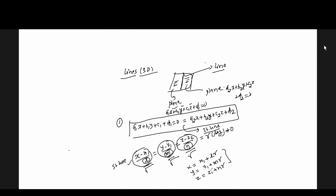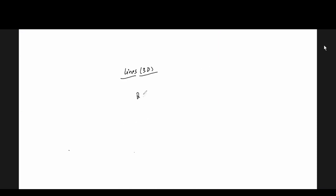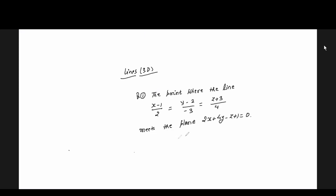If you have this formula, you will be able to substitute it into the plane equation. Any point on the line: if you keep the plane on the line and the plane satisfies the line, the R value will come. If you have the value of R, you will get the answer. Remember R, and from here you have the value of X, Y, Z.